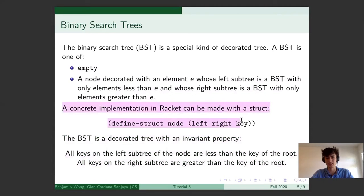In Racket, one possible implementation is to make a struct with three fields and name the struct something useful and also name its field something useful that you can get the information out of. So left subtree, right subtree, and key of your node.